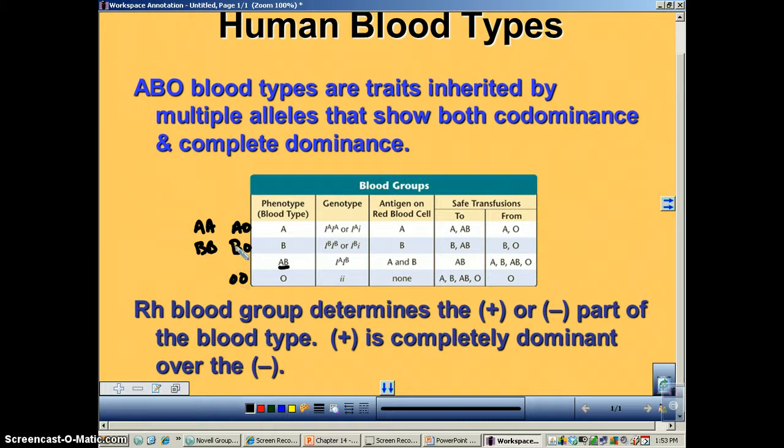Alright, just like we've seen before. I want to remind you that if you have type AB, you are the universal recipient. And if you are type O, you're the universal donor.